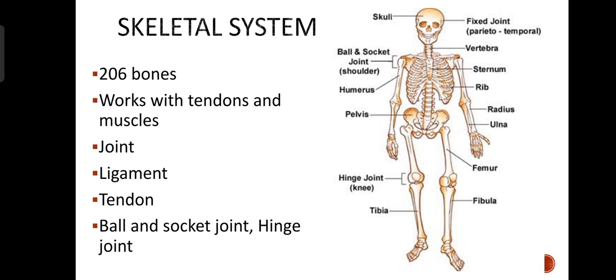Today we will start the skeletal system. As the name indicates, it is the system that deals with your skeleton, or the system that comprises your skeleton. Skeletal system is all the bones in your body, and an adult human being has 206 bones. As we discussed about other systems — like the nervous system comprises nerves, spinal cord, and brain — in the same manner, skeletal system is all the bones in your body.